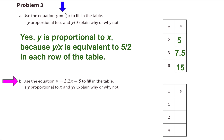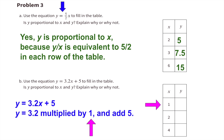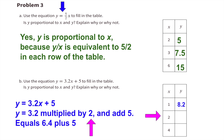Part B: use the equation y equals 3.2 times x plus 5 to fill in the table. When x equals 1, y equals 3.2 times 1 plus 5. 3.2 times 1 is 3.2, and adding 5 gives 8.2. When x equals 2, y equals 3.2 times 2 plus 5. 3.2 times 2 is 6.4, and 6.4 plus 5 is 11.4. So when x equals 2, y equals 11.4.